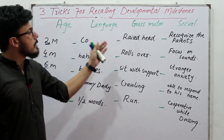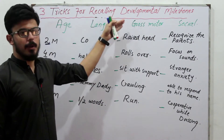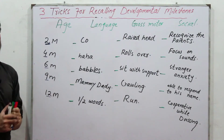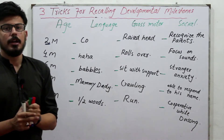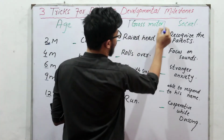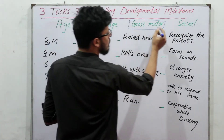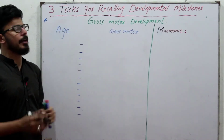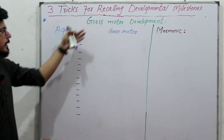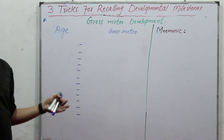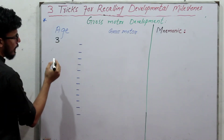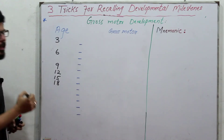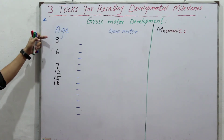Now coming towards the third trick, specifically for recalling gross motor developmental milestones. For the ages, just follow the table of three: that is 3, 6, 9, 12, 15, 18. Till 18 months is considered as the first junction, after which we move to years: 2, 3, 4, and 5.